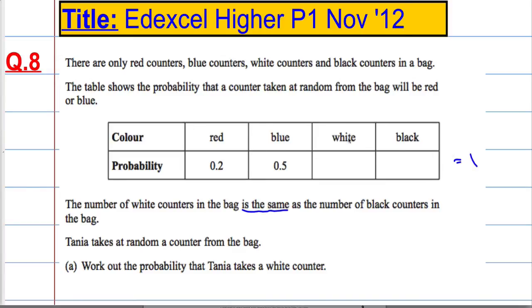But I'm also told that the probability of getting white and the probability of getting black is the same, because the number of white counters and the number of black counters are the same. So that means the probabilities must be the same. So if that is 0.2 and that is 0.5, well that means that in total for here, we must have a total of 0.3 left.